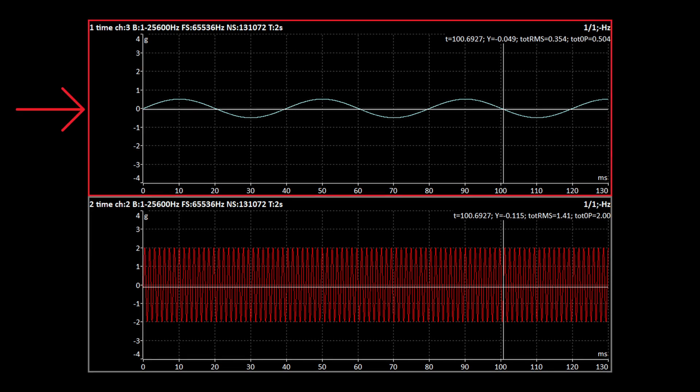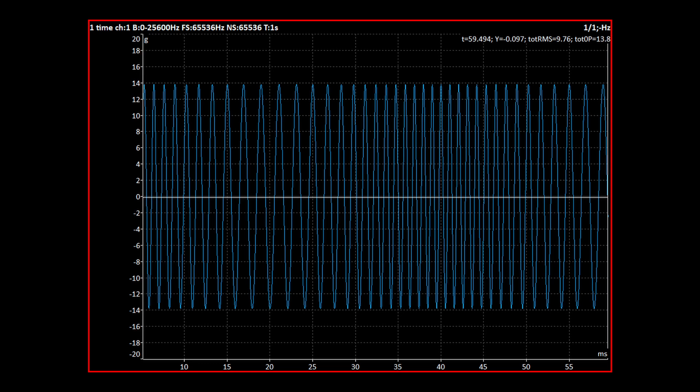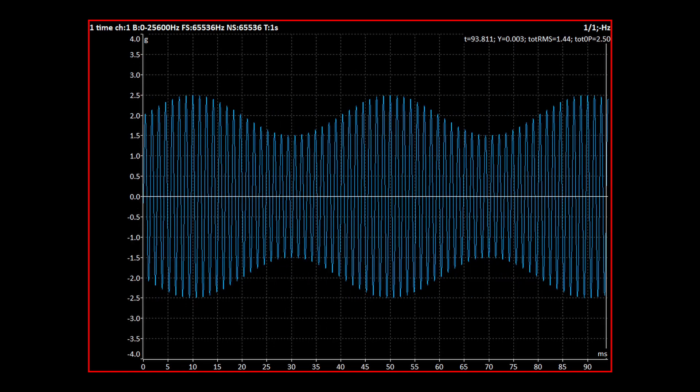We call the modifying signal a modulator, the modified signal a carrier. Modulation changes a certain characteristic of the carrier signal like frequency or amplitude.